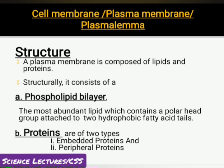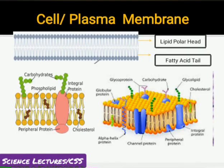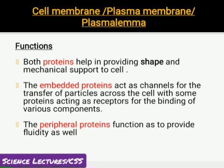Phospholipid layer is double layered — جس میں lipid polar heads outward ہیں اور hydrophobic fatty acid tails inward ہیں۔ ان میں proteins two forms پر present ہیں: embedded proteins اور peripheral proteins۔ Embedded proteins integral parts ہیں جبکہ peripheral proteins margins پر ہیں۔ ان کے علاوہ membrane کے اندر glycoproteins بھی ہیں جو اس کی shape کو maintain کرنے میں help کرتے ہیں۔ Embedded proteins as a channel work کریں گے transport of material کے لیے، اور peripheral proteins cell کی fluidity کو increase کرتی ہیں۔